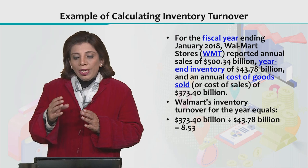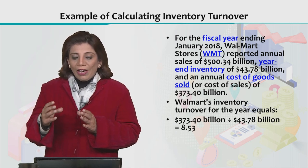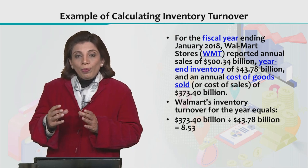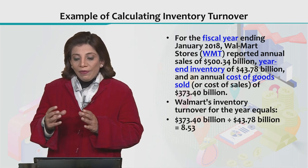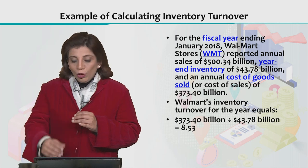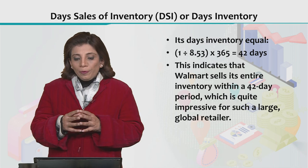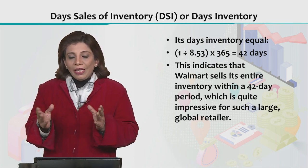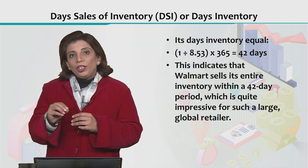If we use Walmart stores for the inventory turnover ratio and calculate the value for the year 2018, it would be $373.40 billion divided by $43.78 billion. This gives you a value of 8.53. Dividing 365 days in a year by 8.53 and multiplying gives you a value of 42.